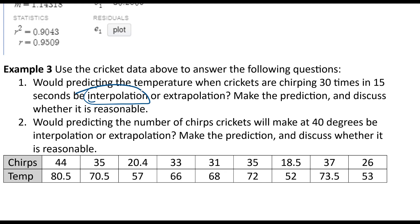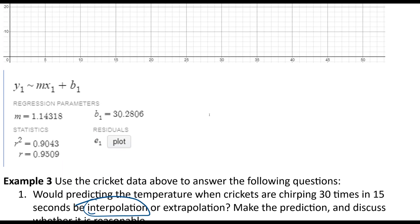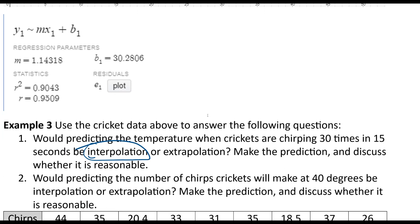So make the prediction and discuss whether it is reasonable. So if I were to come up here to this formula it gives us, this is the M it gives us, so Y is approximately 1.14318 times X plus 30.2806.